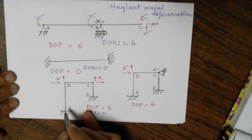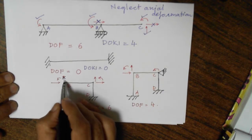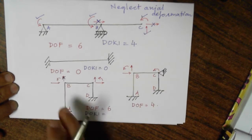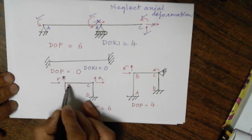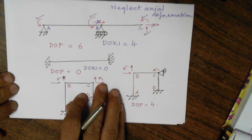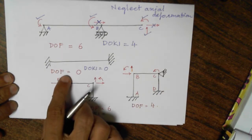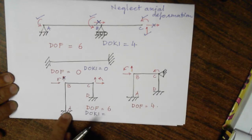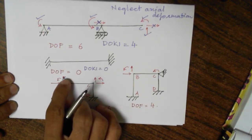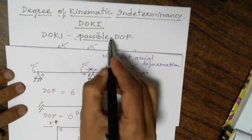Since A cannot deform in y direction, support B also cannot deform in y direction. If we neglect the axial deformation of column A-B and support A is not settling down, joint B will also not leave its position in y direction. So though theoretically possible, practically it is impossible for B to move in y direction — we are cancelling this as a not-possible degree of freedom. Is the rotation possible? Yes, rotation is independent and possible. Is the deflection in x direction possible? Yes — this is a sway frame. Deflection of B in y direction depends on deflection of A, and since A is not deflecting, deflection of B in y direction is not possible.